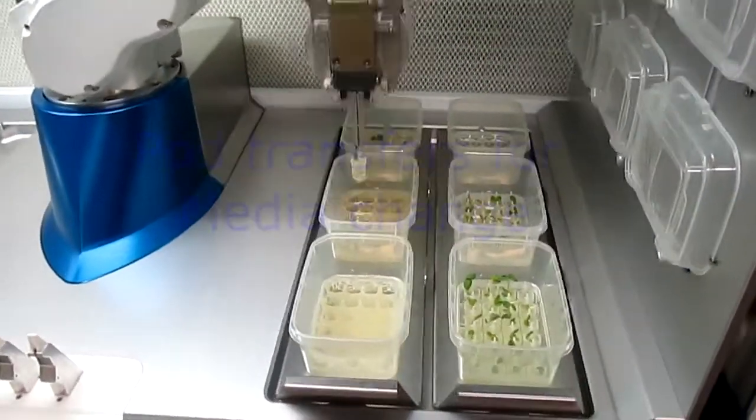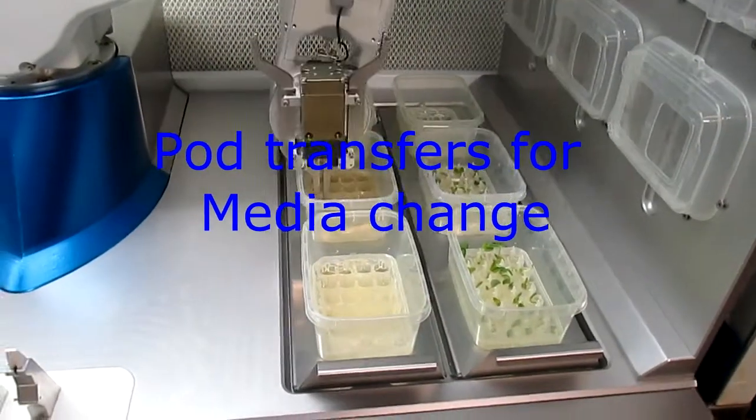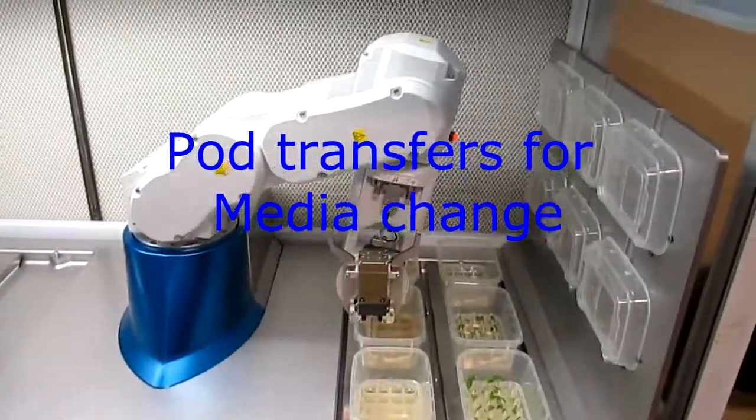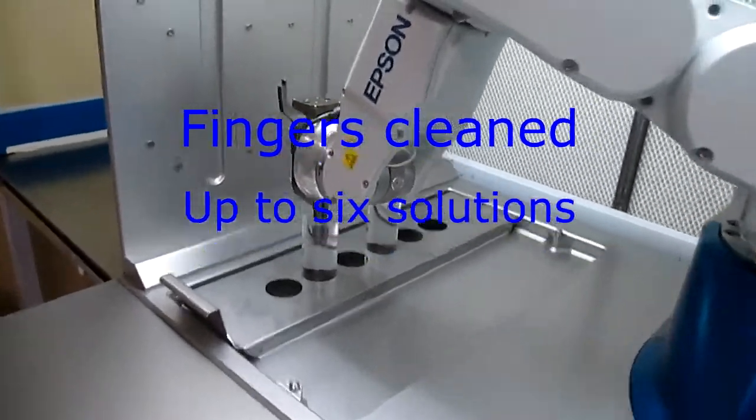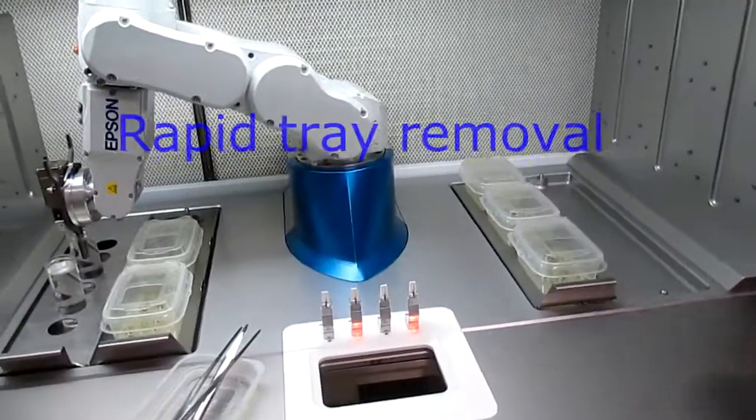Another operation is fast pod transfer between any sets of boxes to change media. These take less than 2 seconds per plantlet without operator involvement. Pod fingers and lid horns are automatically cleaned and sterilized with up to 6 baths of ethanol and other solutions.